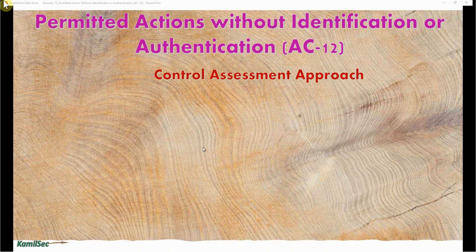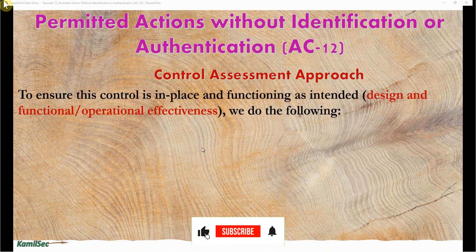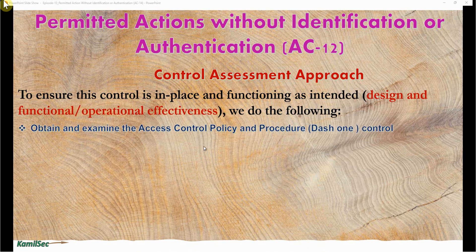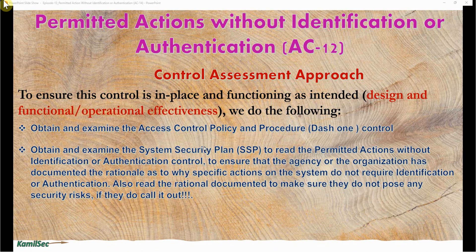Now let's look at the control assessment approach to ensure this control is in place and functioning as intended — that is, the design and functional or operational effectiveness of the control. We do the following: first, obtain and examine the access control policy and procedure — the dash-one control — and read the policy to see what it says about this control. Second, obtain and examine the system security plan — the SSP — to read the permitted actions without identification or authentication control, ensuring that the agency or organization has documented the rationale as to why specific actions on the system do not require identification or authentication.